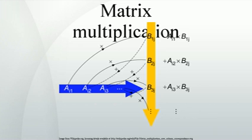The i,j entry of matrix A is indicated by A_ij, whereas a numerical label, not matrix entries, on a collection of matrices is subscripted only, e.g. A1, A2, etc.